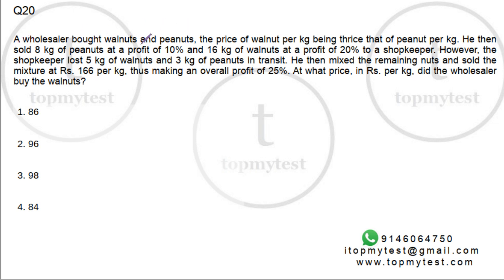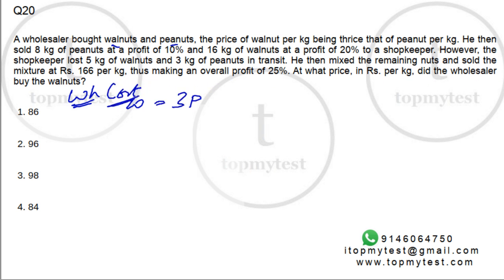A wholesaler bought walnuts and peanuts — the price of walnut per kilo being thrice that of peanut. So walnut costs three times peanuts for the wholesaler. He then sold 8 kilos of peanuts at a profit of 10% and 16 kilos of walnut at a profit of 20% to a shopkeeper.